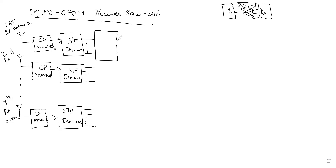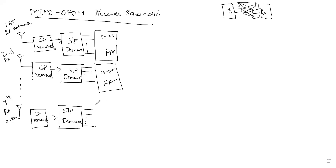Just see the OFDM receiver: at the transmitter we took the IFFT, so at the receiver end we have to apply FFT. The signal will go through this N-point FFT.